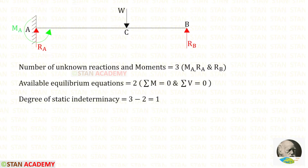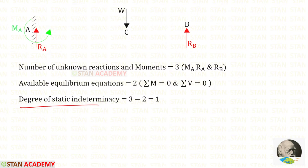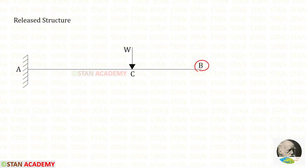Now let us find the degree of static indeterminacy. In this beam, the number of unknown reactions and moments are 3: the moment MA and the vertical reactions RA and RB. The available equilibrium equations are 2: sigma M = 0 and sigma V = 0. The degree of static indeterminacy equals 3 minus 2, which gives 1. To make this beam statically determinate, we have to remove any one of these. Let us remove RB.